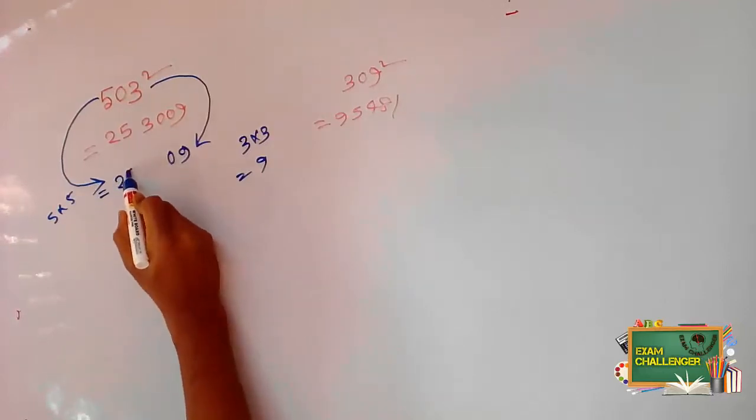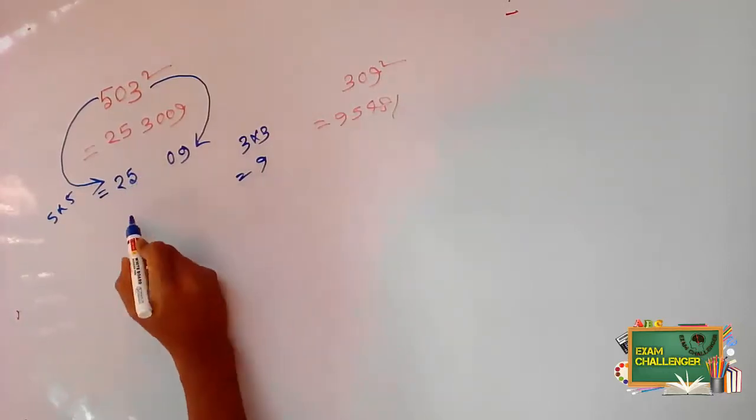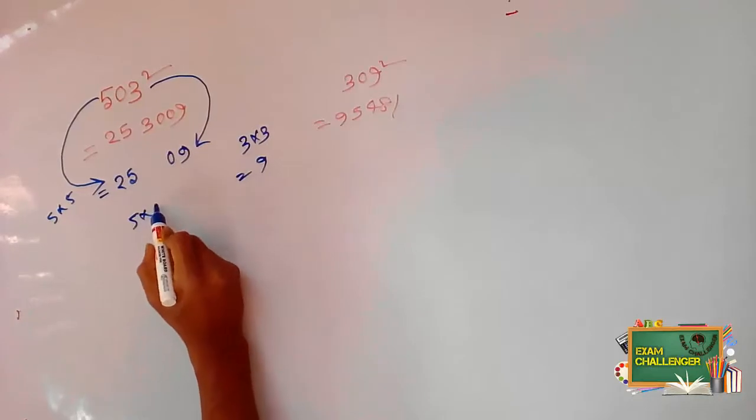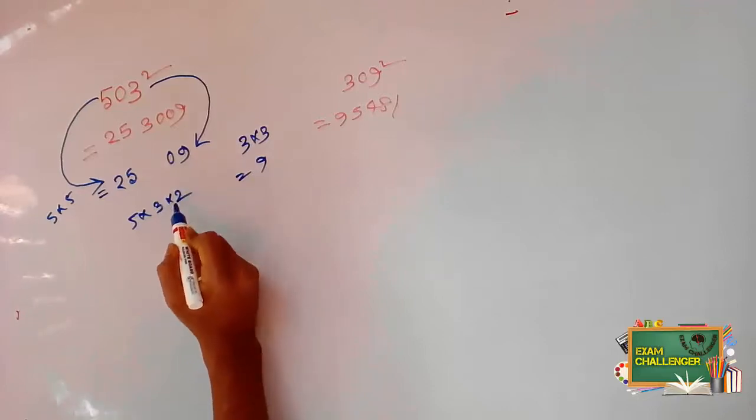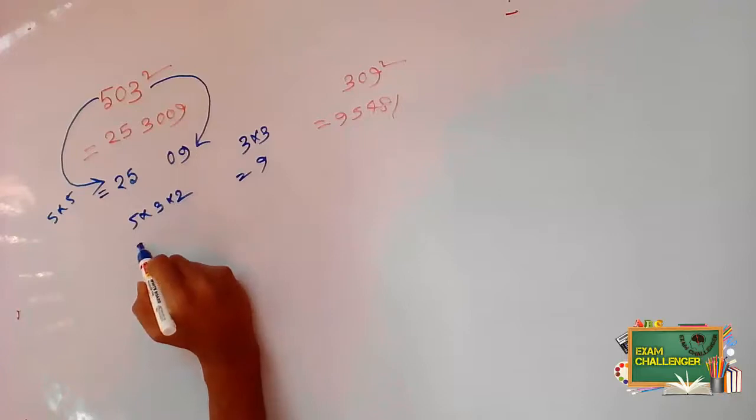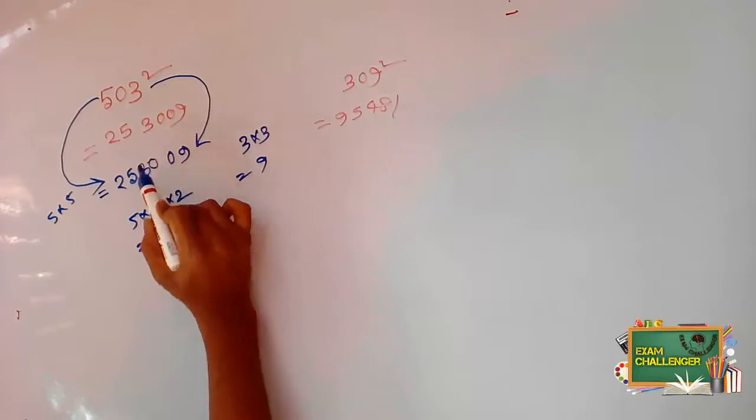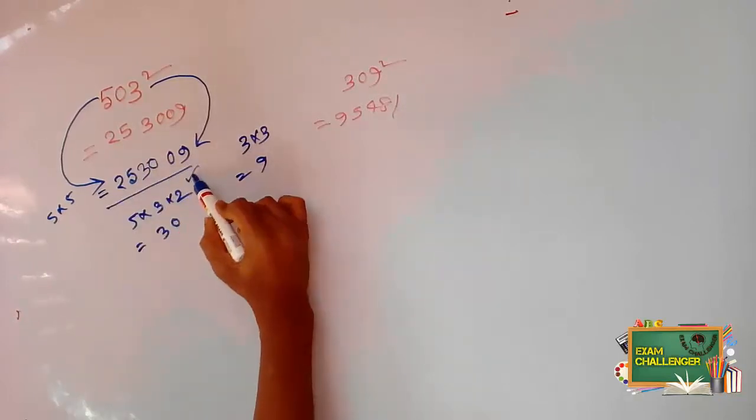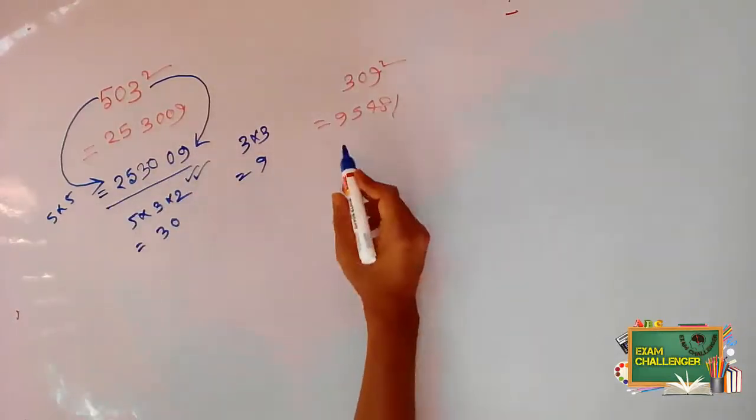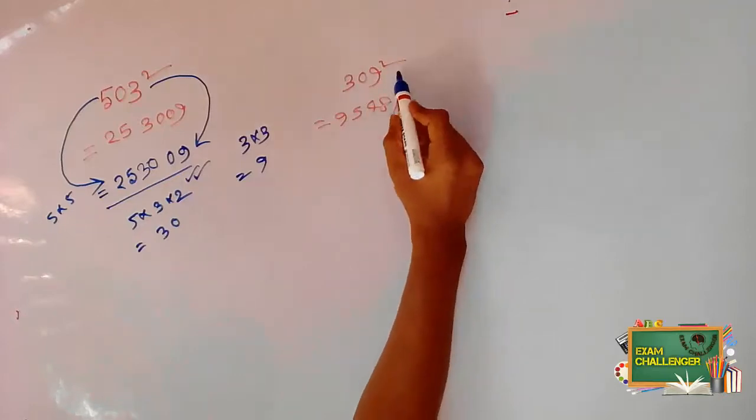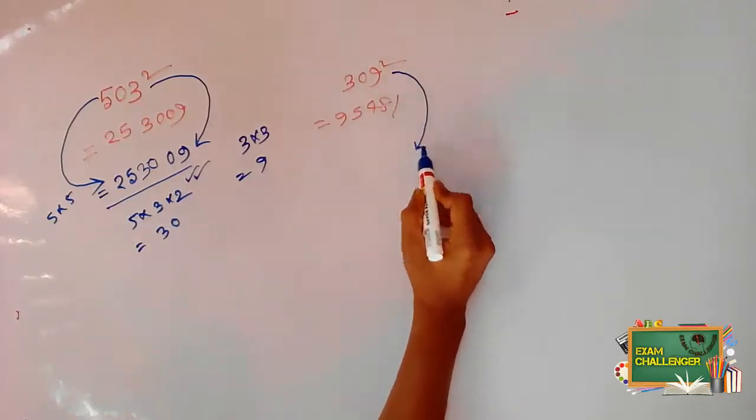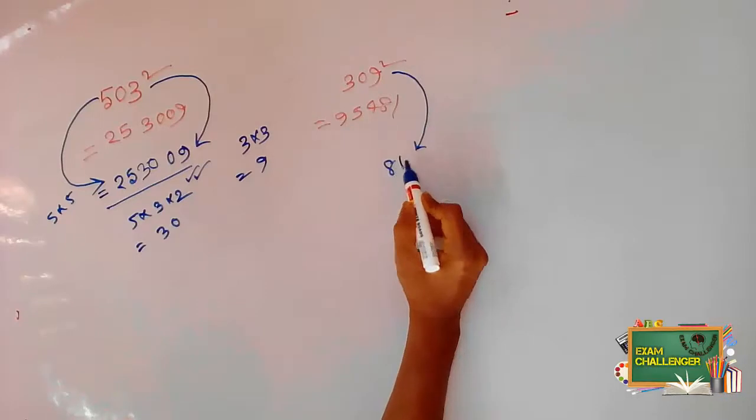That means 25. 25, we write it here. Now what we have here is 5 into 3 into 2, meaning the square of 3 is not needed here. So we don't write 0.